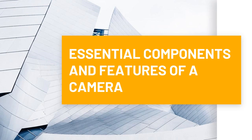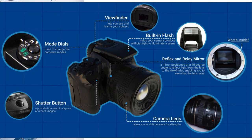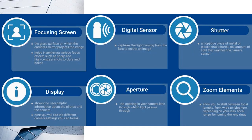We also have here the essential components and features of a camera — please have a look through the images after this slide. A digital camera has many parts, but the most important ones are the viewfinder, built-in flash, reflex and relay mirror, camera lens, shutter button, and mode dials. Other important elements include the focusing screen, digital sensor, shutter, display, aperture, and zoom elements.